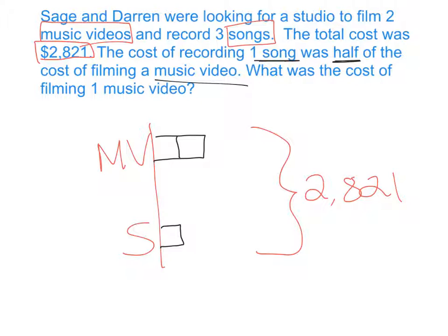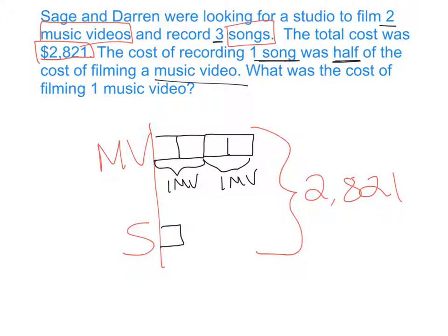Now we need to go back to the first sentence. Sage and Darren didn't just want to record one music video — they wanted to film two music videos, so we're going to have to double this. Now we have a second music video. How many songs did they want to record? They wanted to record three songs. The most important piece of information here is that the boxes have to be the same size. So do we have three songs? Here's one song, two songs, three songs — one music video, two music videos. Now we're all set.